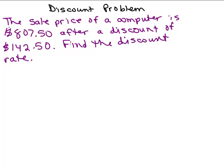All right. The sale price of a computer is $807.50 after a discount of $142.50. So the sale price was $807.50. It was discounted by $142.50, so we're looking for a percent because we're looking for the discount rate.